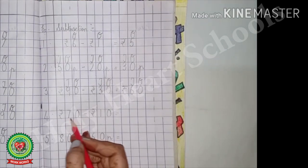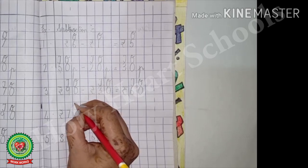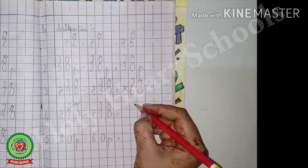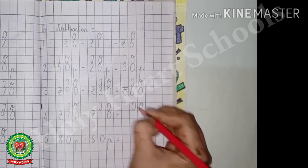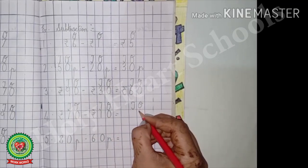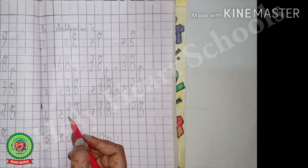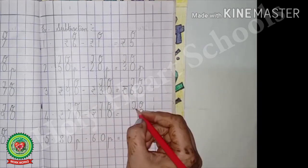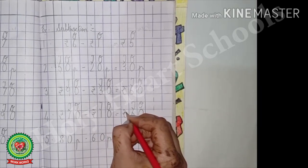Number 4: rupees 70 minus rupees 10. Write the place value chart — 1s and 10s on both numbers, and 1s and 10s in the answer. 0 minus 0, the answer is 0 — write 0 under 1s. Now 7 minus 1: what comes before 7 is 6, so the answer is 6 — write 6 under 10s. Write the unit, which is rupees.